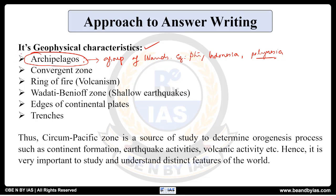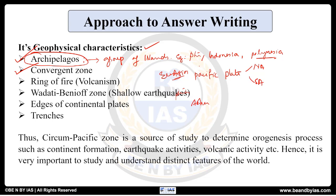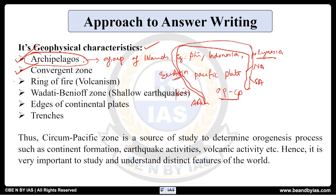The second characteristic is that it is a convergent zone. The Pacific Plate is there, and looking at it from the side, in one place you have the North American Plate, South American Plate, Asian Plate, and smaller plates like the Philippine Plate and Eurasian Plate, and the Australian Plate. All these oceanic and continental plates form a convergent zone here. Highlight this point — this entire region consists of a convergent zone.